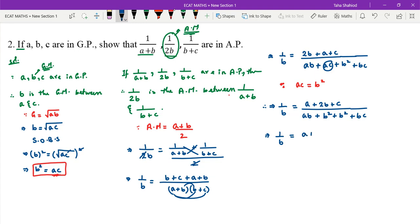1/B equals (A + 2B + C) divided by (AB + 2B² + BC).